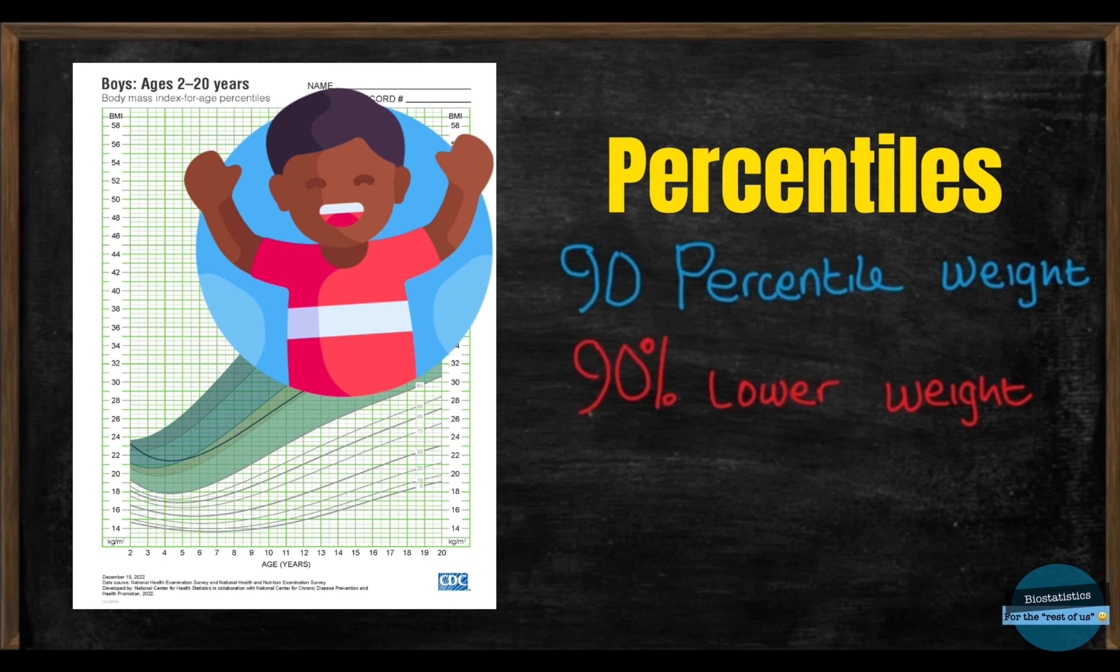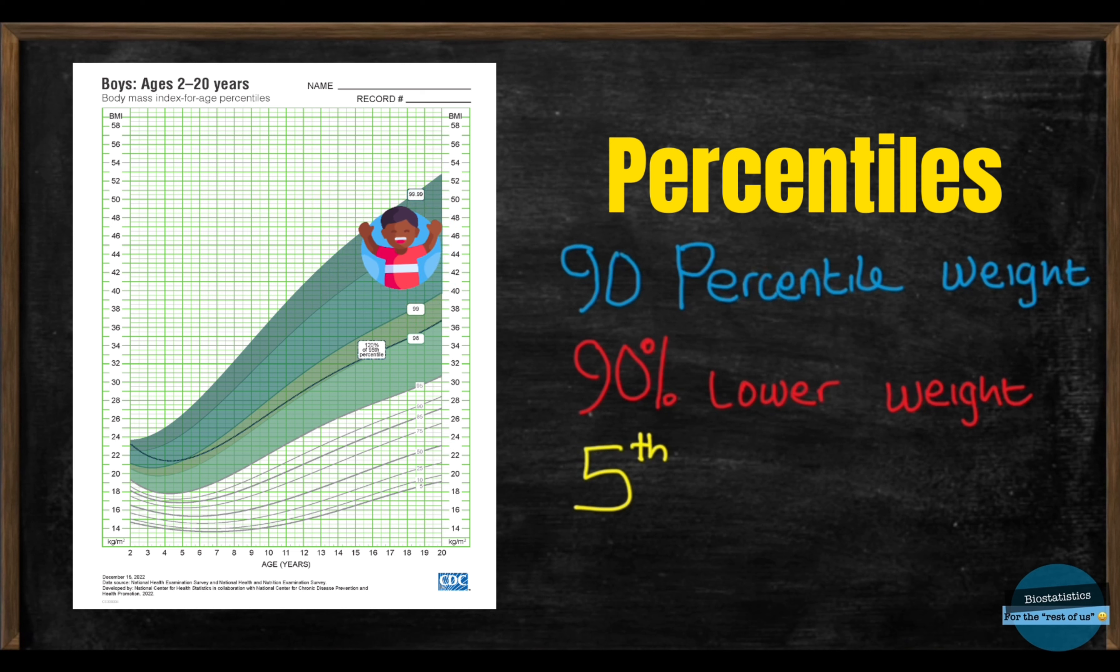The CDC's growth reference charts use the 5th and the 95th percentiles as the outermost percentile code of values indicating abnormal growth. So, you see how these percentiles are useful in statistics and public health, right?